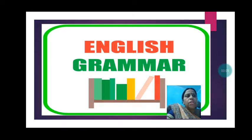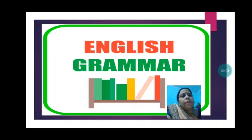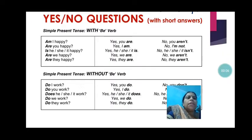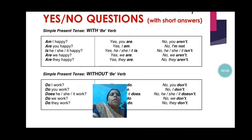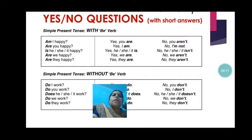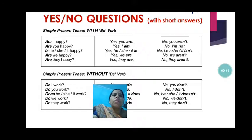Good morning children. How are you all? Hope you all might be fine and safe. So today children, in English grammar, we are going to learn how to make yes-no questions with the verb be for the simple present tense form.